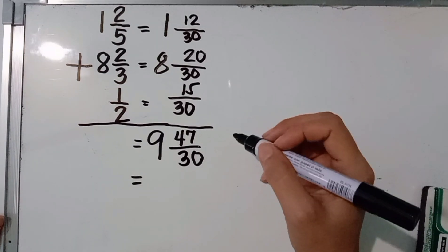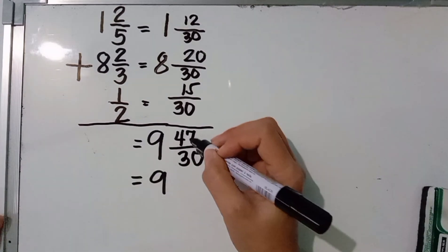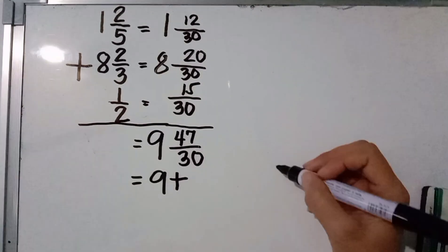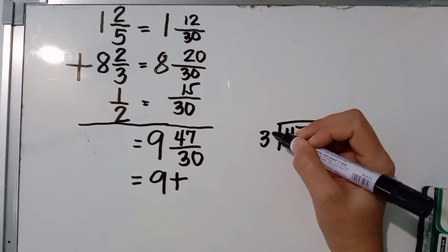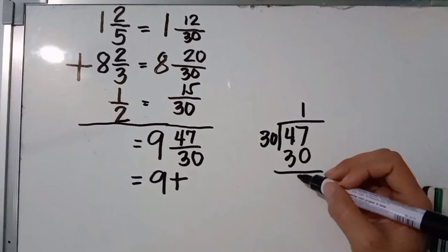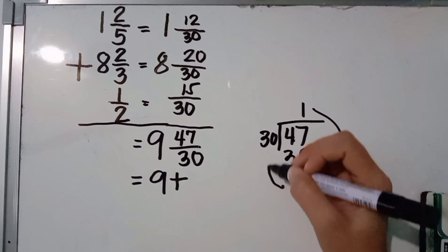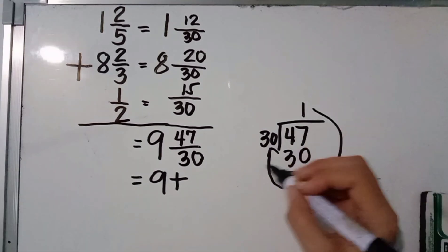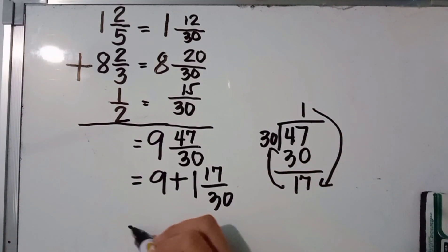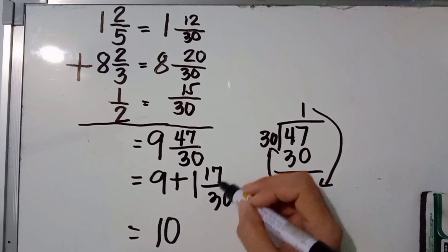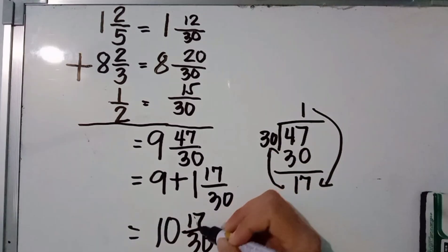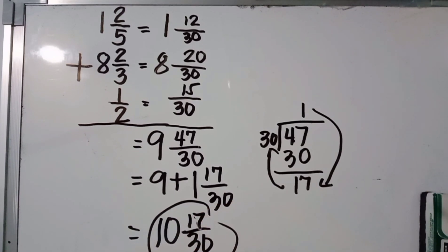47 and 30 have no common factor, so we convert the improper fraction to a mixed number. 47 divided by 30 is 1, and 1 times 30 is 30. 47 minus 30 is 17. So 47 over 30 becomes 1 and 17 over 30. Adding 9 plus 1, our final answer is 10 and 17 over 30.